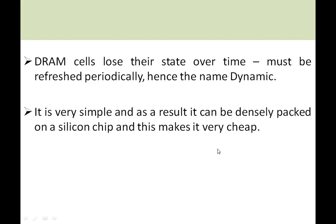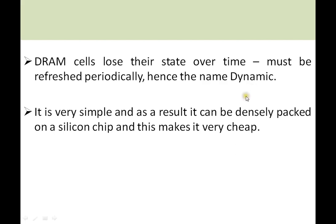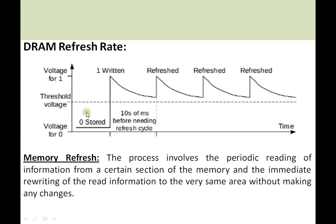DRAM memory cells lose their state over time because capacitors lose their charge over a period of time. Because of that, DRAM memory cells need to be refreshed periodically in addition to read and write operations — there is an additional refresh operation. Since DRAM is very simple, consisting of only one transistor and one capacitor per bit, it can be densely packed on the silicon chip and is also very cheap compared to SRAM.